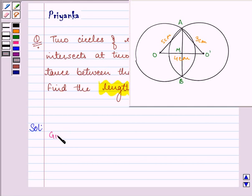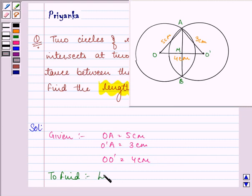Here we are given that OA is equal to 5 cm, O'A is equal to 3 cm, and the distance between OO' is equal to 4 cm. We need to find the length of the common chord, that is AB.